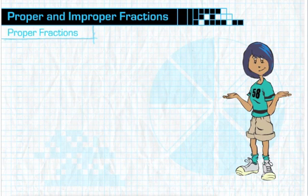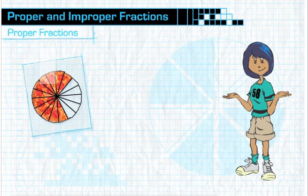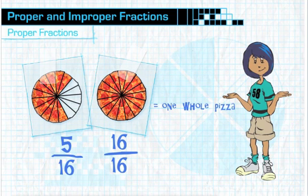Right, just think about the pizza I had last night. I ate five slices of the original 16-sliced pizza. Five out of 16 slices is the fraction 5-sixteenths. 5-sixteenths is a proper fraction because its numerator, 5, is less than its denominator, 16.